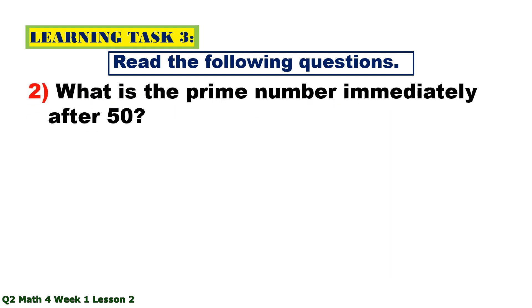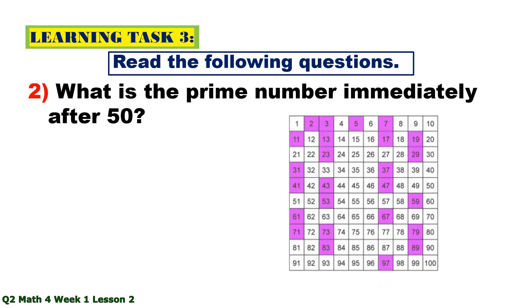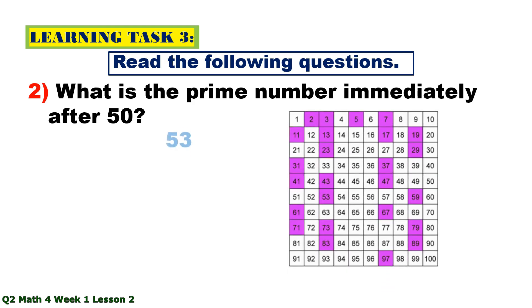Number 2. What is the prime number immediately after 50? The answer is 53.